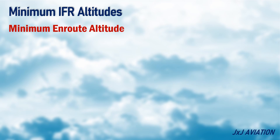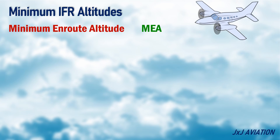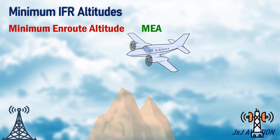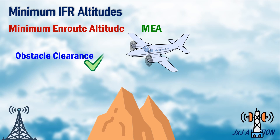Minimum Enroute Altitude, MEA — this is the lowest published altitude at which an aircraft can fly between radio fixes. This altitude ensures obstacle clearance and navigational signal coverage.